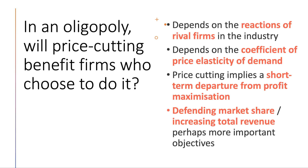Whether firms benefit from cutting prices in an oligopoly depends heavily on rivals' reactions. In an oligopoly with significant uncertainty, the key determinant is what rivals do — and they will probably follow a price fall. The effect on revenue and sales depends on the price elasticity of demand. If there is strong consumer loyalty to rival firms, cutting your price may not yield much extra volume, and revenues may fall. Price cutting also implies at least a short-term departure from profit maximisation, though some firms are more interested in market share and revenue than in pure profit.